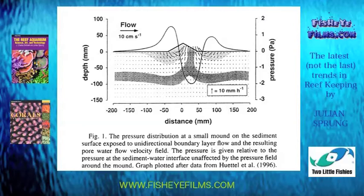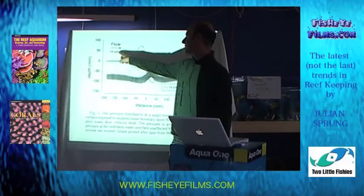I wanted to show you a drawing that explains how biological filtration works in a sand bed. What you see here is a view of an aquarium from the side. This is what we could call a deep sand bed — maybe about 15 centimeters, which is about six inches. There's a little pile of sand in the middle, and water flow at 10 centimeters per second.